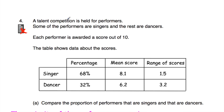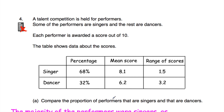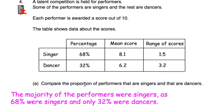Question number four: a talent competition is held for performers — some are singers and some are dancers — and each performer is awarded a score out of 10. The table shows that 68% of performers are singers and 32% are dancers. Part (a) asks us to compare the proportions: the majority of performers were singers, as 68% were singers and only 32% were dancers.